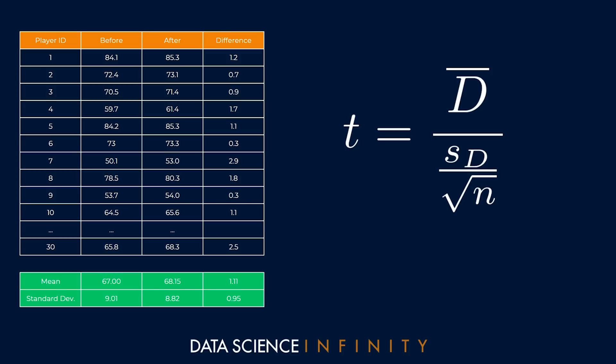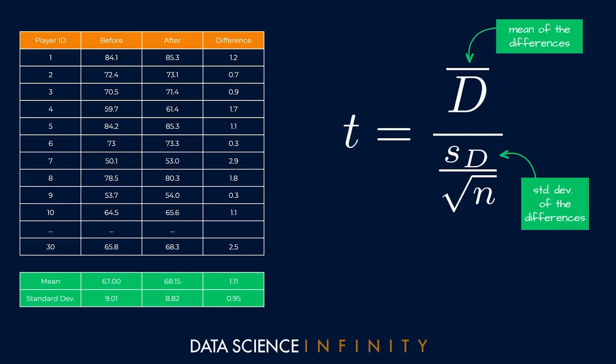What does each part of this mean? Let's put it into words. At the top we have d bar and this represents the mean of the differences, in other words the average of all of the before and after jumping height differences across all players in our squad. Below that we have sd, the standard deviation of the differences. We also have n, the sample size or the number of players in our squad, and the formula tells us to take the square root of this. With all of this combined we will get our t statistic.